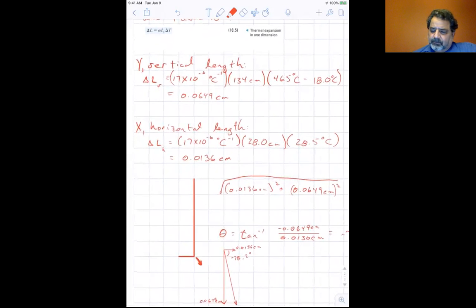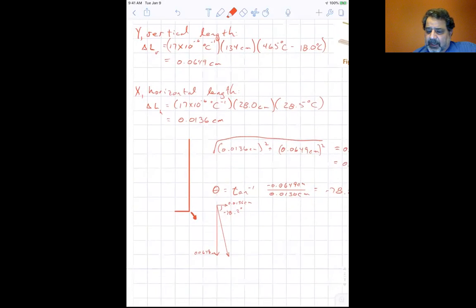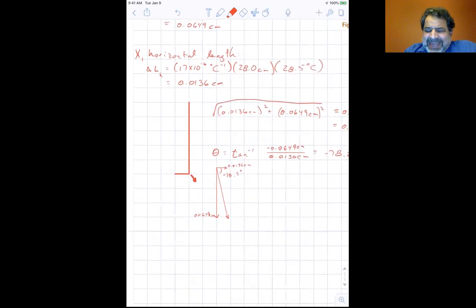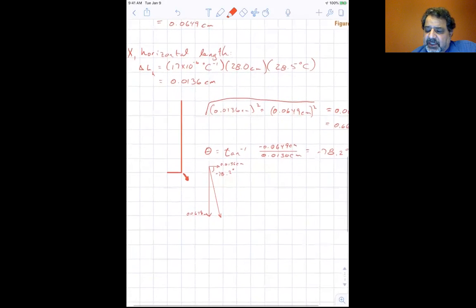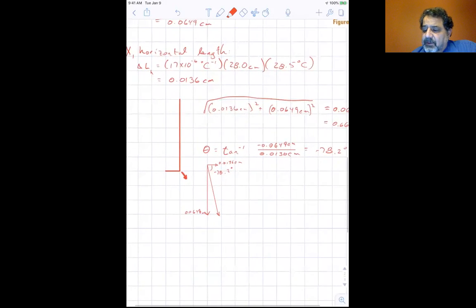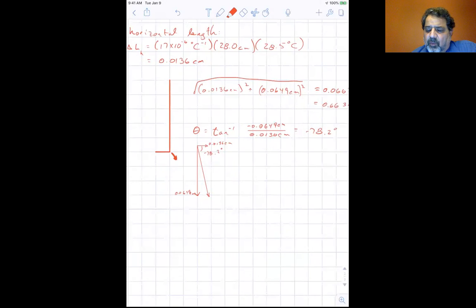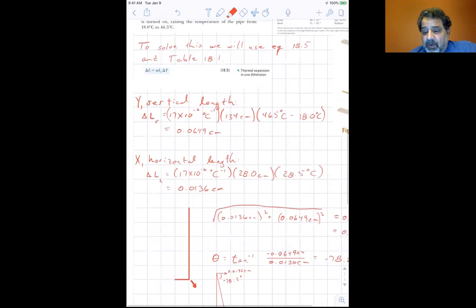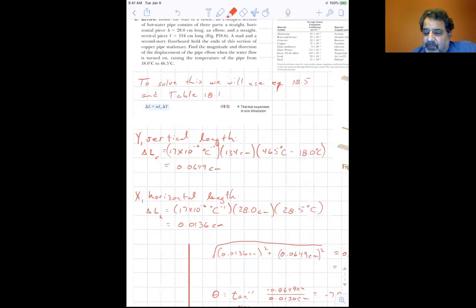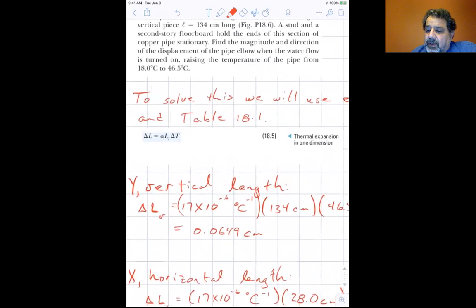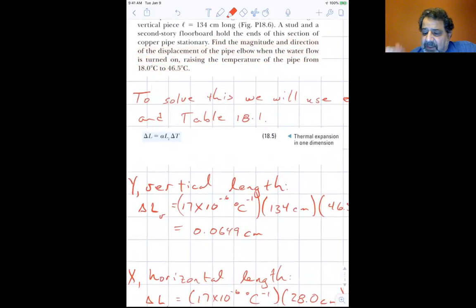Now in the horizontal direction, you get a delta L subscript H for horizontal. You have the same 17 times 10 to the minus 6 degrees C inverse times 28 centimeters times 28.5 degrees C. That's what the 46.5 minus 18 is. And you get 0.0136 centimeters. And we're not done. We still have the question. Remember, always read your question carefully. The question is find the magnitude and direction of the displacement of the pipe elbow when the water flow is turned on, raising the temperature of the pipe from 18 to 46.